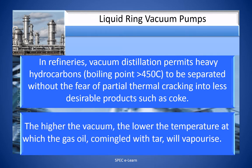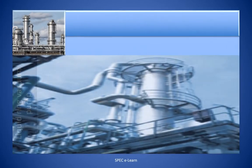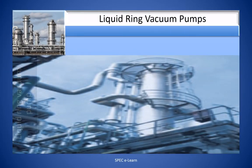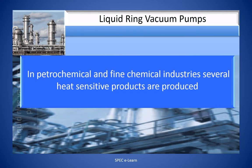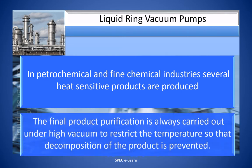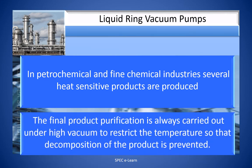The higher the vacuum, the lower the temperature at which the gas oil co-mingled with tar will vaporize. In petrochemical and fine chemical industries, several heat-sensitive products are produced. Finer product purification is always carried out under high vacuum to restrict the temperature so that decomposition of the product is prevented.